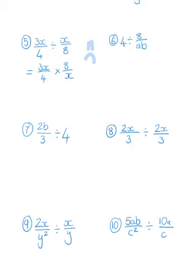So x over 8 becomes 8 over x. Now that we've done that, cancelling is nice and easy. We can see that x cancels with x, and 8 cancels with 4 to leave us with 2. That means 3 times 2 is 6, and it's 6 over 1. The great thing about maths is we're lazy, and we can just write it as 6.